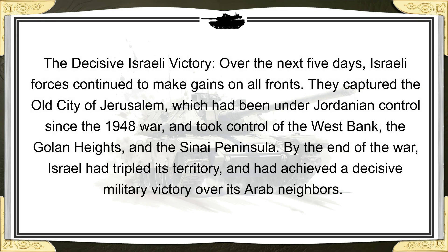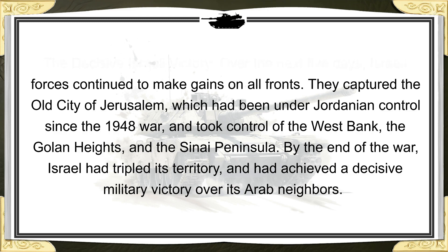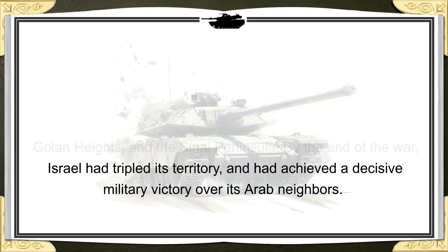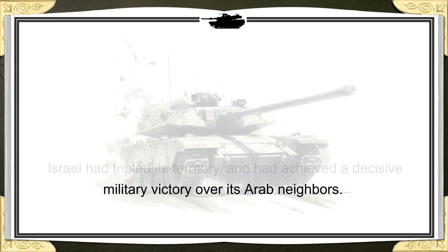Over the next five days, Israeli forces continued to make gains on all fronts. They captured the old city of Jerusalem, which had been under Jordanian control since the 1948 war, and took control of the West Bank, the Golan Heights, and the Sinai Peninsula. By the end of the war, Israel had tripled its territory and achieved a decisive military victory over its Arab neighbors.